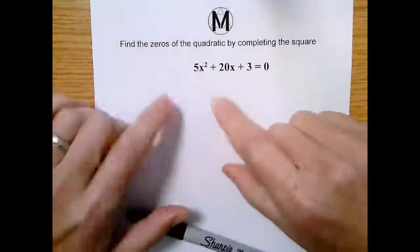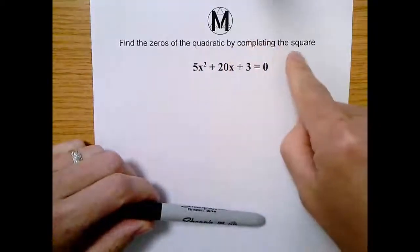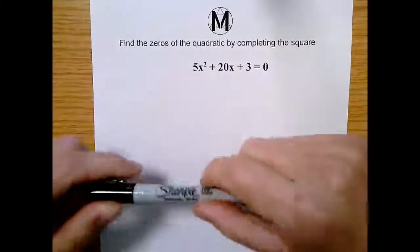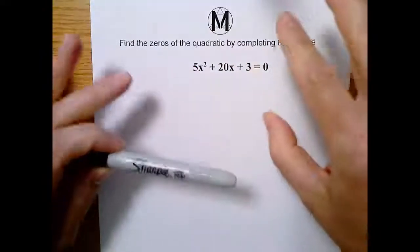Alright, let's do some math. It says here find the zeros of the quadratic by completing the square. Okay, we can totally handle this. We can use this method they want us to use, that's no problem.